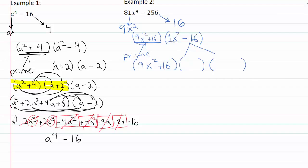The second factor we can split into two more sets of parentheses using the difference of squares rule. The square root of nine x squared is three x, and the square root of sixteen is four, giving us one factor with a plus and one with a minus.